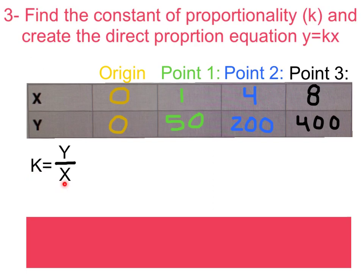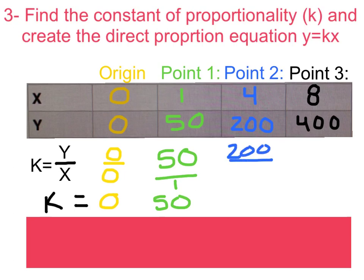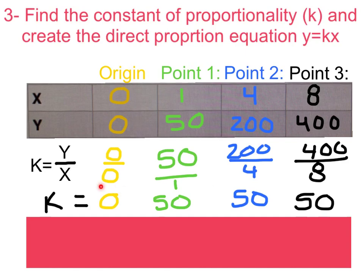So for our first one, for our origin, we know our y is 0 and our x is 0. Now if we wanted to reduce that, we know that our k would equal just 0, because 0 divided by 0 would give us 0. Now we don't necessarily need this point to find our constant of proportionality, but we want to make sure that it does go through that point. Our point 1 is going to be 50 over 1, which reduces down to 50. Our point 2 is 200 over 4, that also gives us 50. And last but not least, our last point 400 over 8, and that also will reduce to 50.